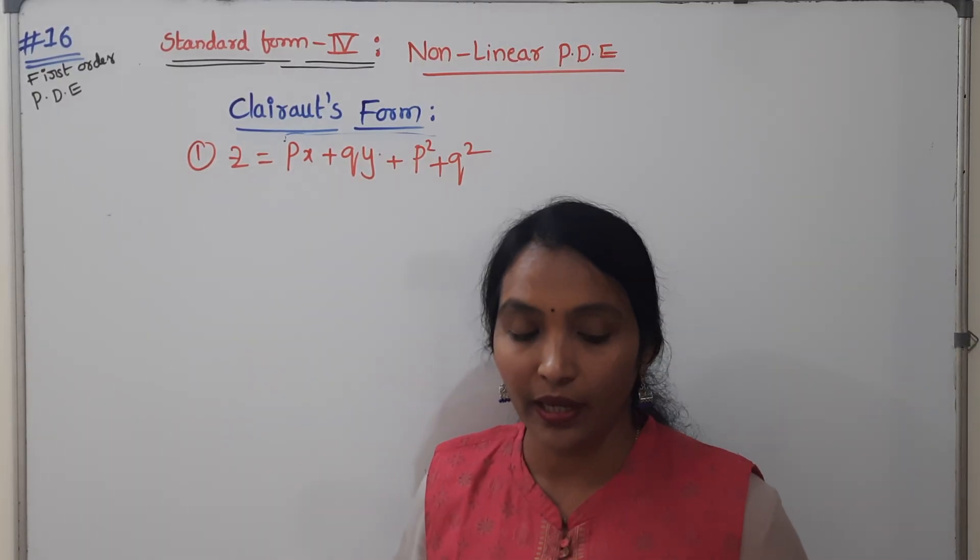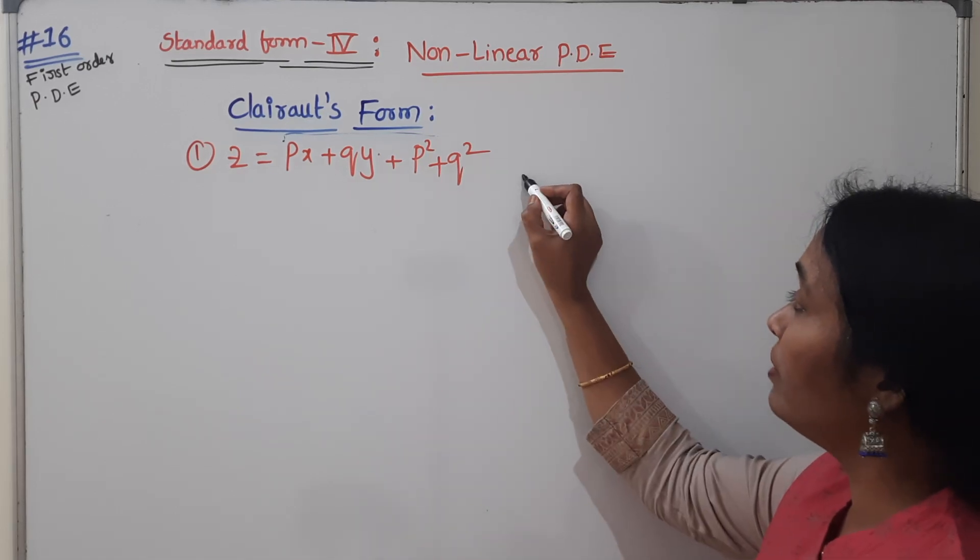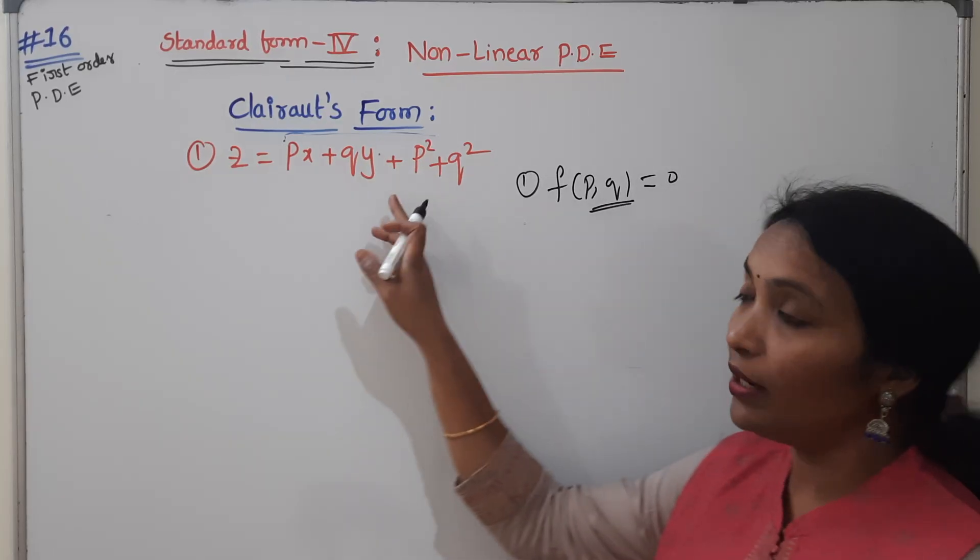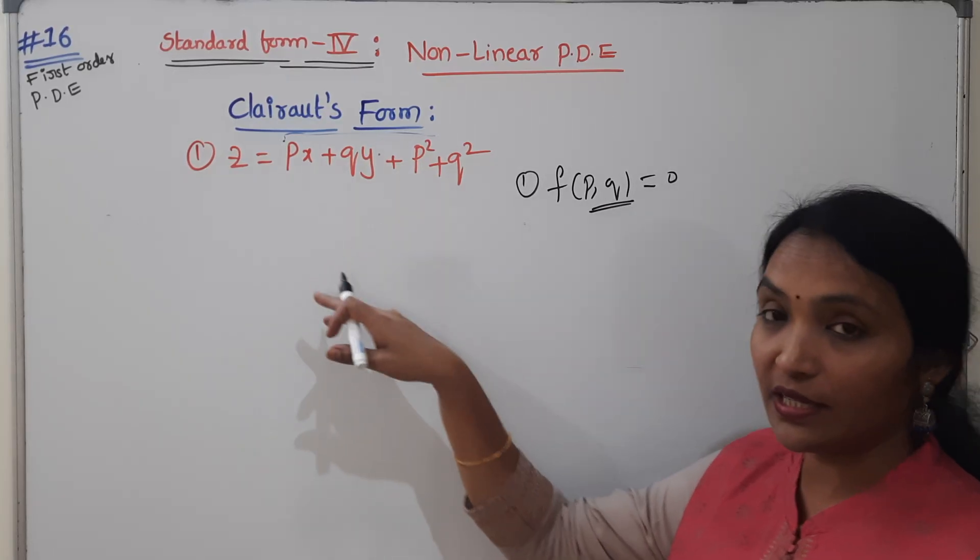What is our form 1? What is standard form 1? F of PP QQ is standard form. Is there any only PP Q? No, it is involving XYZ also, so this is not first one.